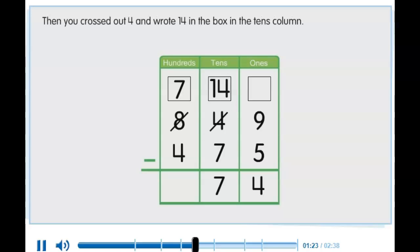Then, you crossed out 4 and wrote 14 in the box in the tens column. Then, subtract the hundreds. What is the difference of 849 minus 475?